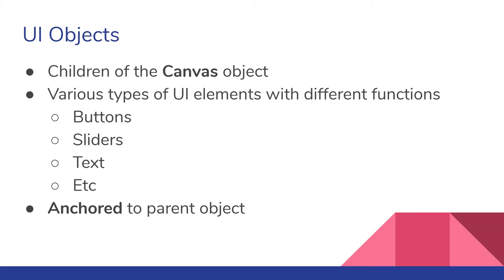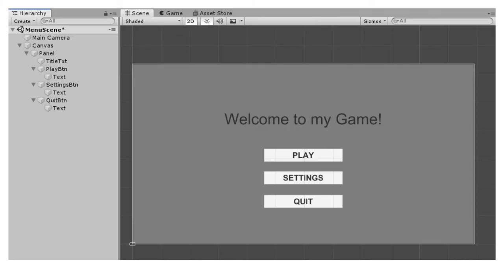There are various different types of UI objects. Under the UI menu in Unity you can spawn buttons, sliders, text, and more. They're anchored to their parent object, so their scale is based on what their parent is. Here's an example hierarchy for a simple main menu: we have the canvas, then a panel with a gray background, and inside that panel are buttons and text.